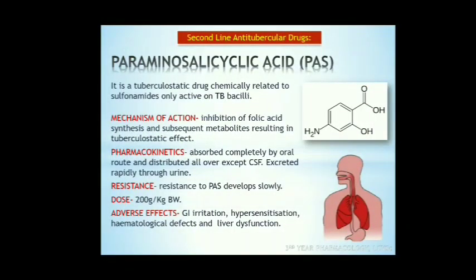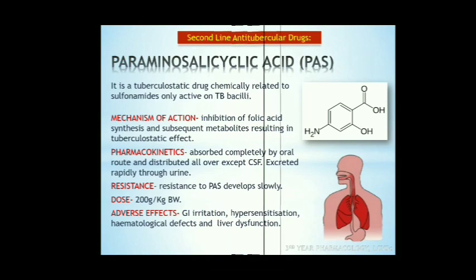Now second line anti-tubercular drugs. The second line drugs include para-aminosalicylic acid. It is a tuberculostatic drug chemically related to sulfonamides and active only against tubercular bacilli. Mechanism of action: inhibition of folic acid synthesis and subsequent metabolites resulting in tuberculostatic effect. It is absorbed completely by oral route and distributed everywhere except CSF. Excreted rapidly by glomerular filtration and tubular secretion. Resistance develops slowly. Dose: 200 mg/kg. Adverse effects include GI irritation, hypersensitization, hematological defects, and liver dysfunction.